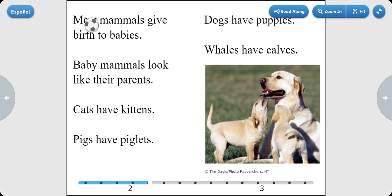Most mammals give birth to babies. Baby mammals look like their parents. Cats have kittens. Pigs have piglets. Dogs have puppies. Whales have calves. Here is a dog.